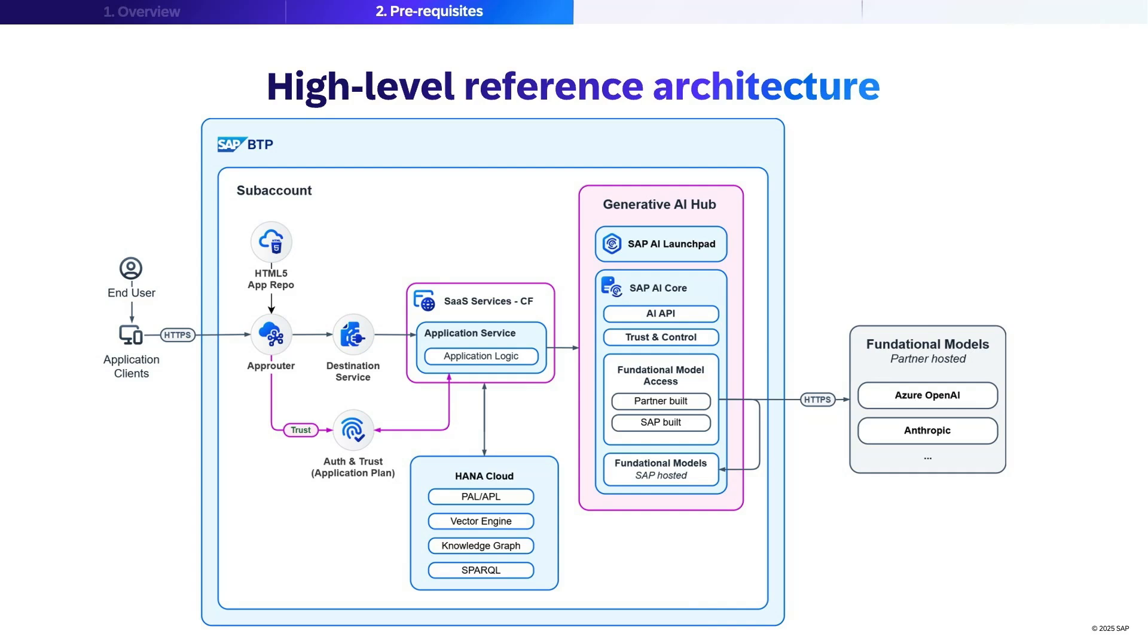At the heart of this architecture is SAP HANA Cloud. Here your data is managed and analyzed using three native engines: the vector engine for similarity search and embeddings, the knowledge graph engine for semantic relationships and reasoning, and classic predictive analysis library and automated predictive library for advanced analytics and full SPARQL support for complex graph queries.